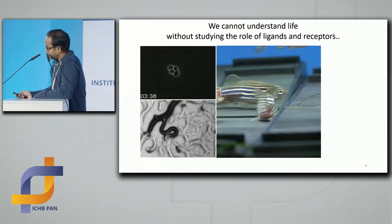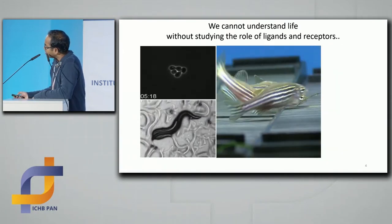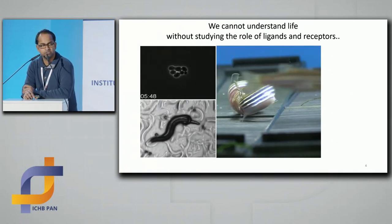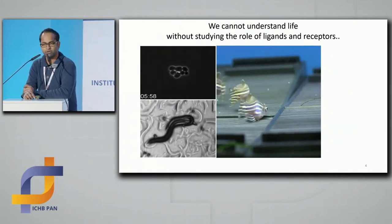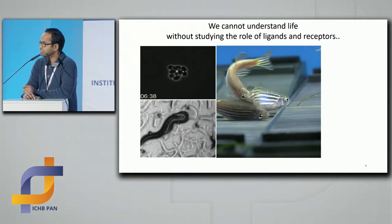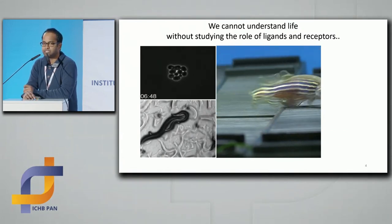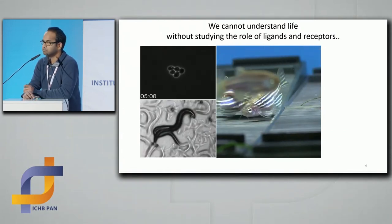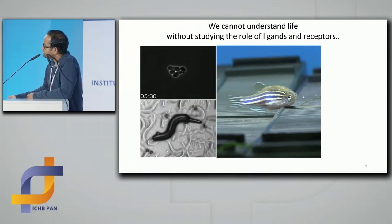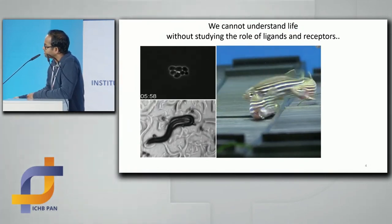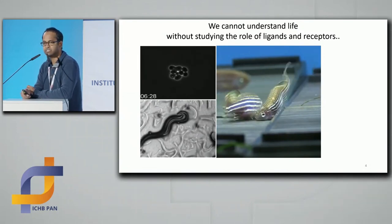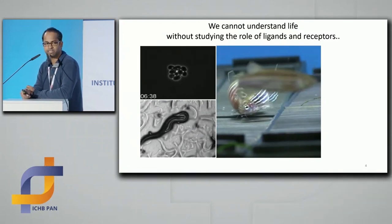In any organism you choose, there will always be ligands and receptors — be it C. elegans, E. coli, zebrafish, humans, or mice. Mating in yeast, mating in C. elegans, mating in zebrafish, and egg laying — everything is because of ligands and receptors.